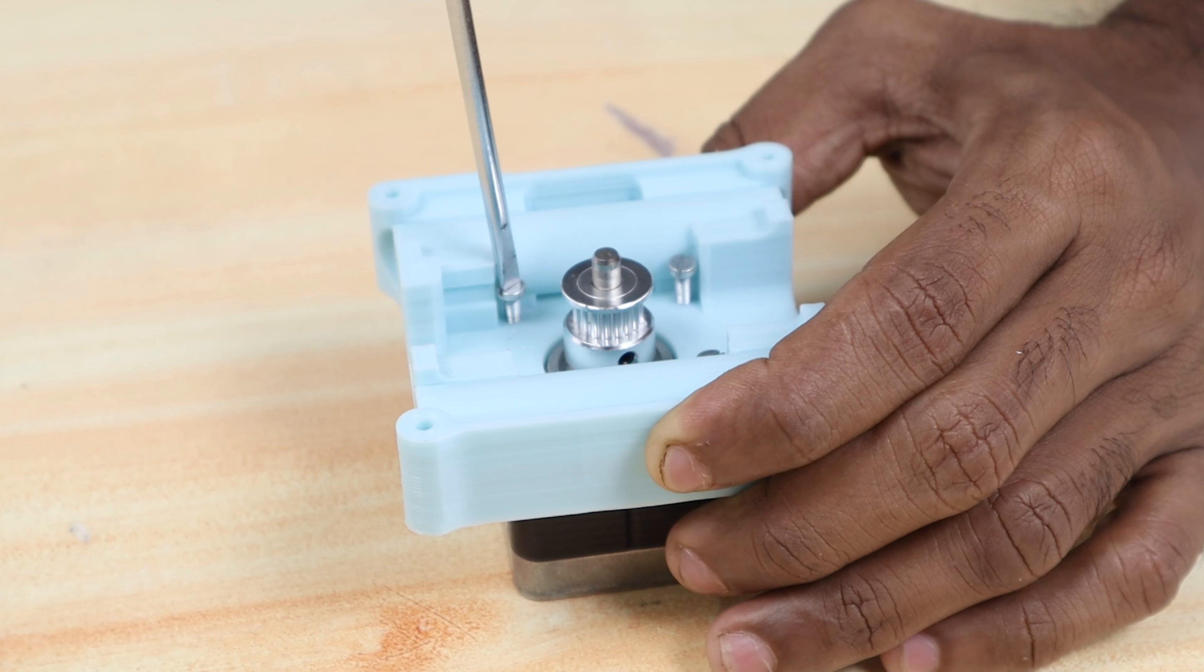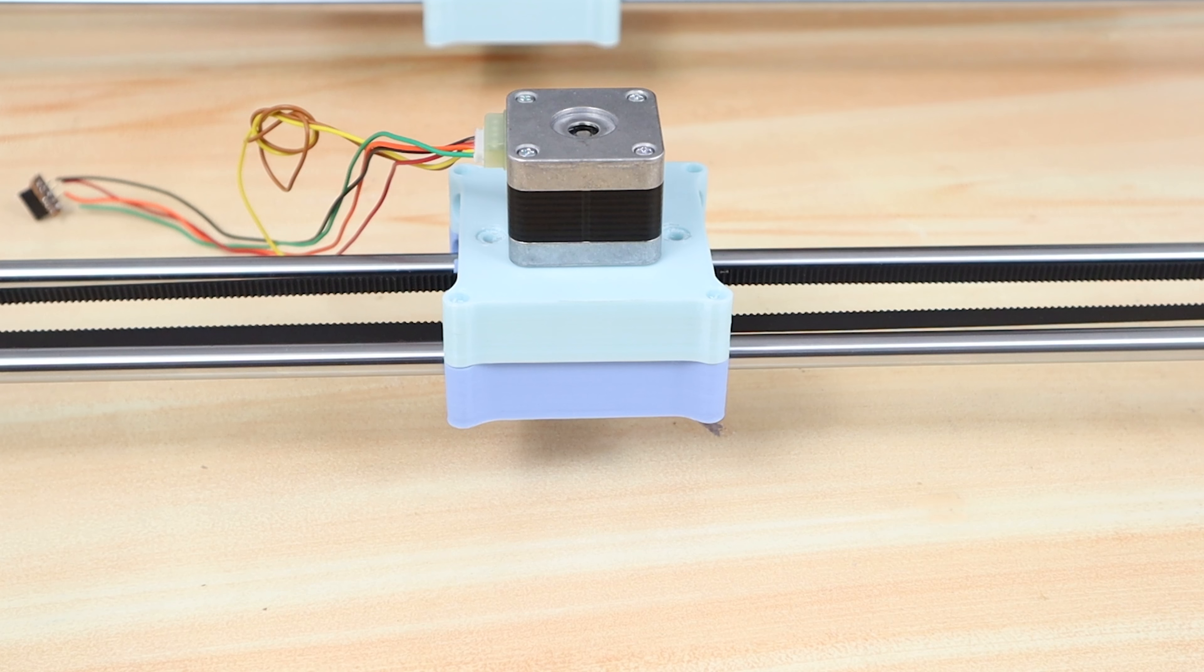Then we started screwing the Y axis motor with M3 by 10mm screws and it will go over the top of the X axis sliding block. So we finished the X axis.